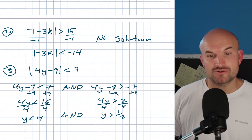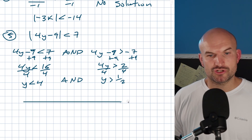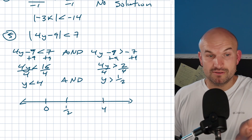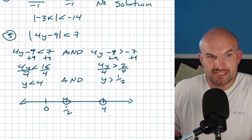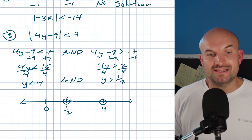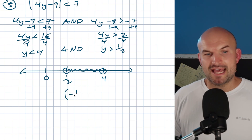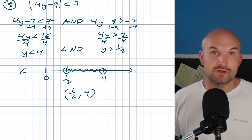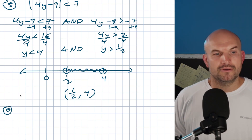Graphing: zero in the middle, one-half to the left of 4. y is less than 4 and y is greater than one-half, so we use open circles at both endpoints. The solution is the values between them. For interval notation, use parentheses since the endpoints are not included: from one-half to 4.